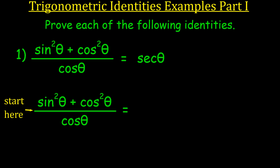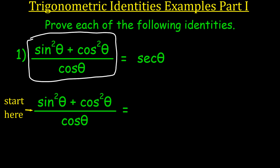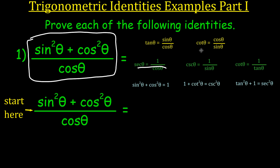We're going to prove that sine squared theta plus cosine squared theta, all divided by cosine of theta, equals secant theta. What we're trying to show is that this big messy fraction, using our identities, will eventually end up looking just like secant theta. These are the main trig identities we've looked at in the first video of our trig identities unit.